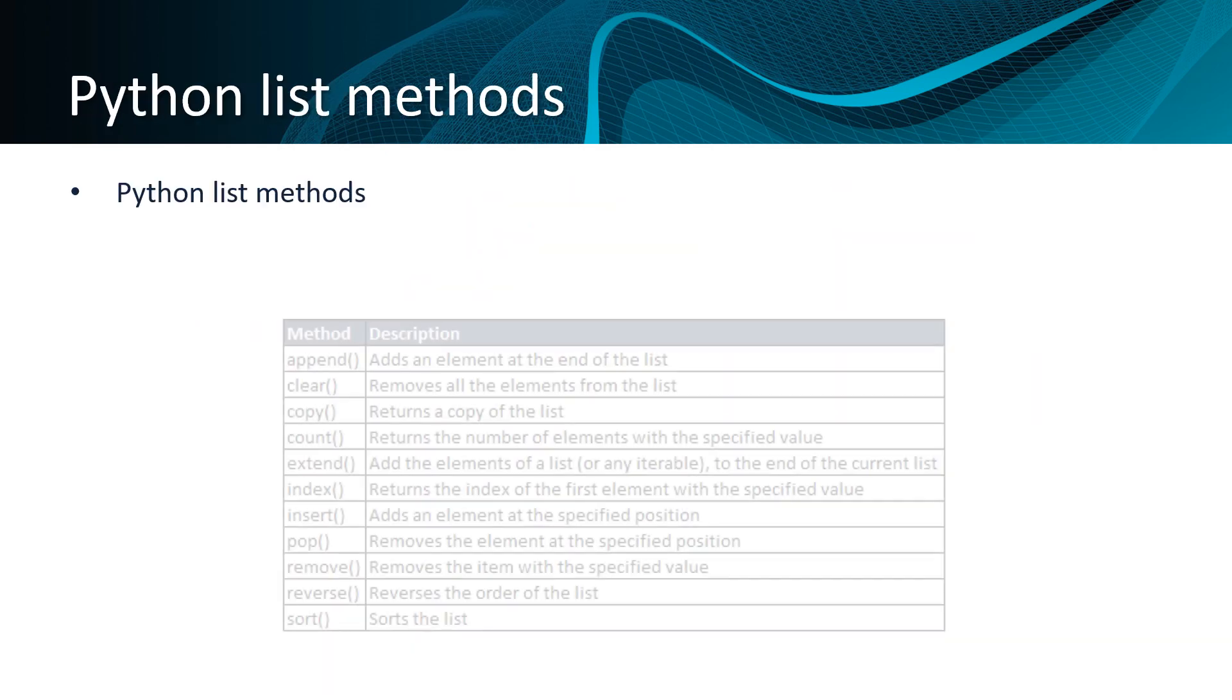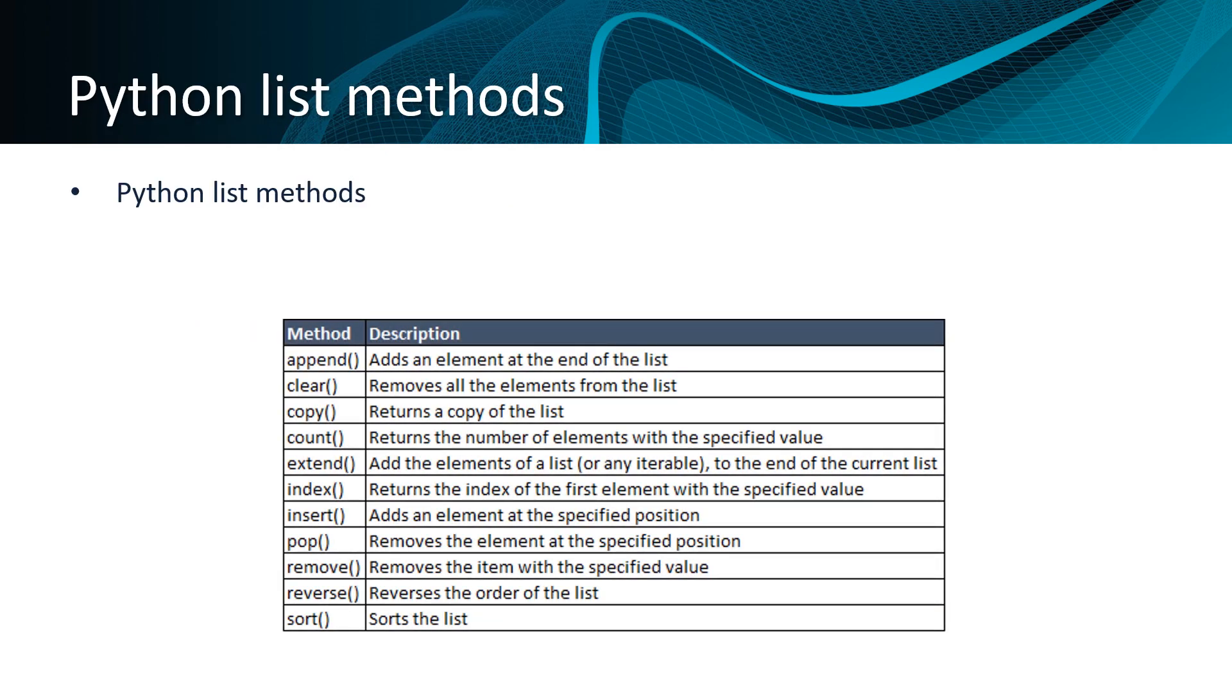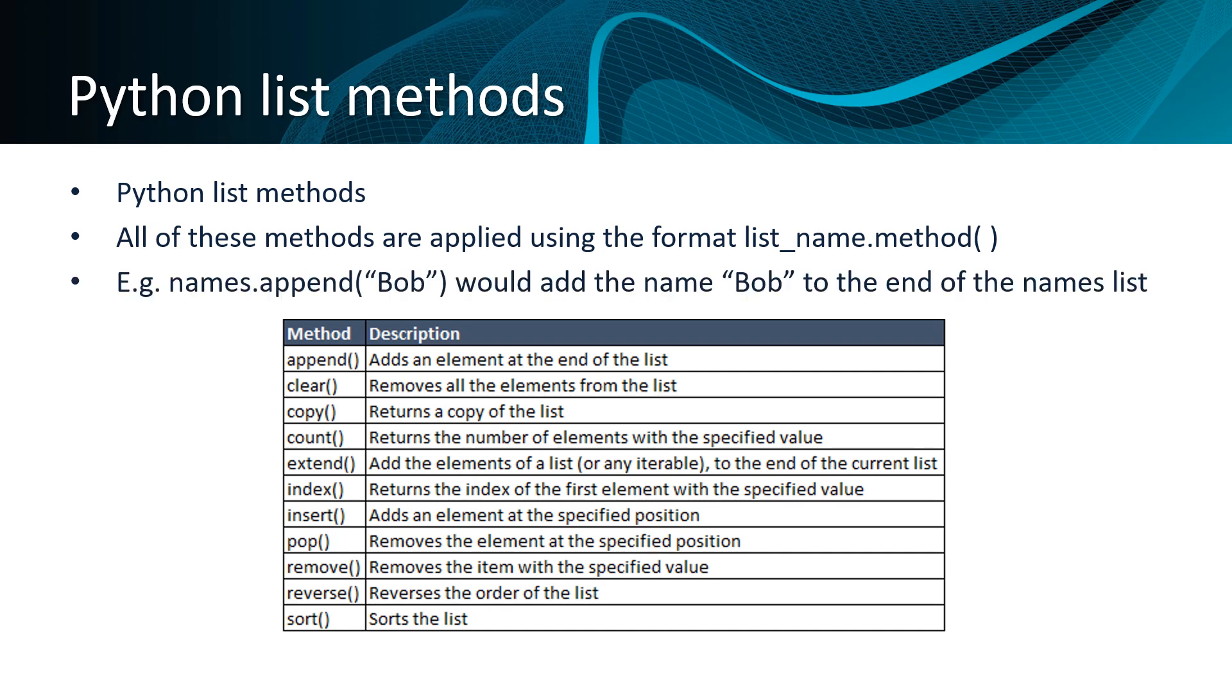Python has a number of list methods that you'll need to become familiar with. All of these methods are applied using the format list_name.method(). For instance, names.append("Bob") would add the name Bob to the end of the list called names. Understanding and being able to use these methods will be essential in later lessons when we're building abstract data types such as queues and stacks.